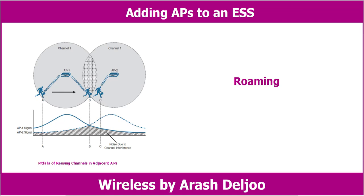Ideally, when the client in this figure moves to location B, it should begin to anticipate the need to roam or transfer its association from AP1 to AP2. Notice that AP1 and AP2 are spaced appropriately for roaming where their cells have some overlap. The two APs are out of range of each other, so they are not aware of each other's transmissions on the same channel. Each AP will coordinate the use of the channel with devices inside its own cell, but not with the other AP and devices in the other cell. As a result, the client around location B will probably experience so many collisions that it may never be able to roam cleanly.